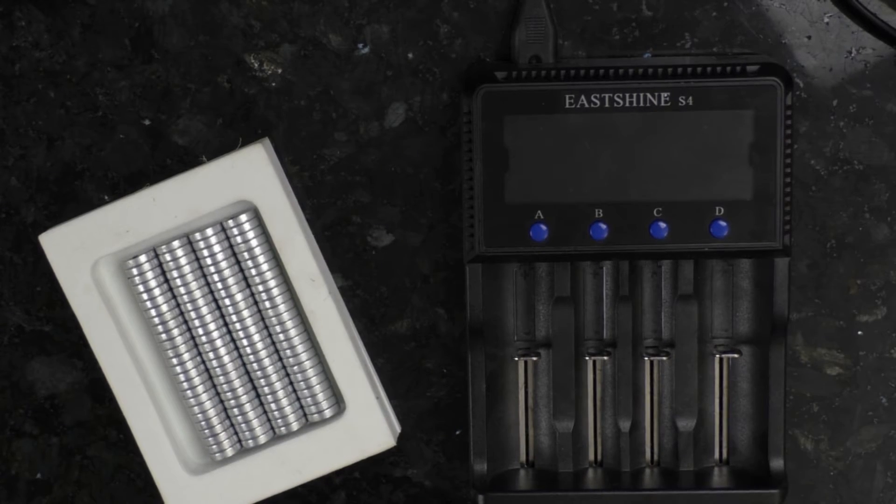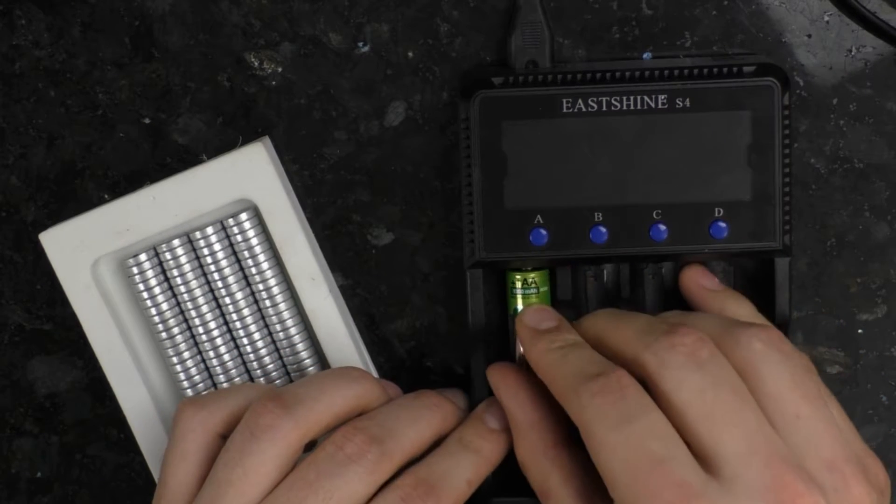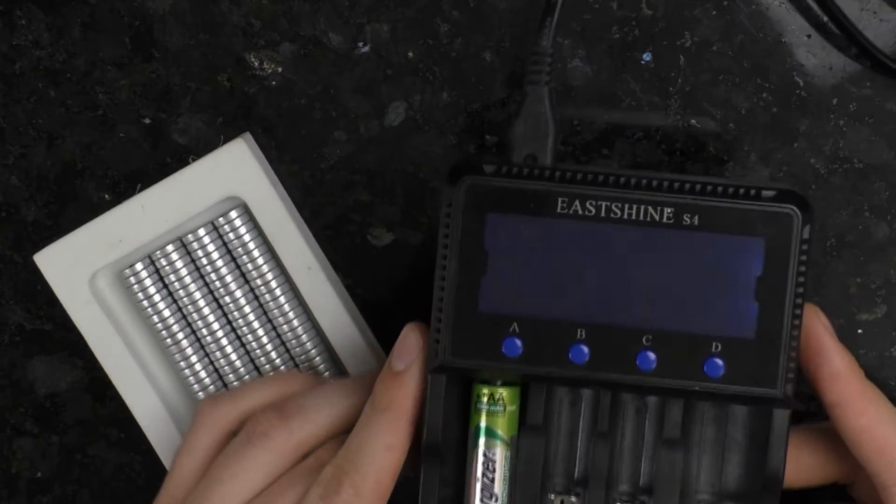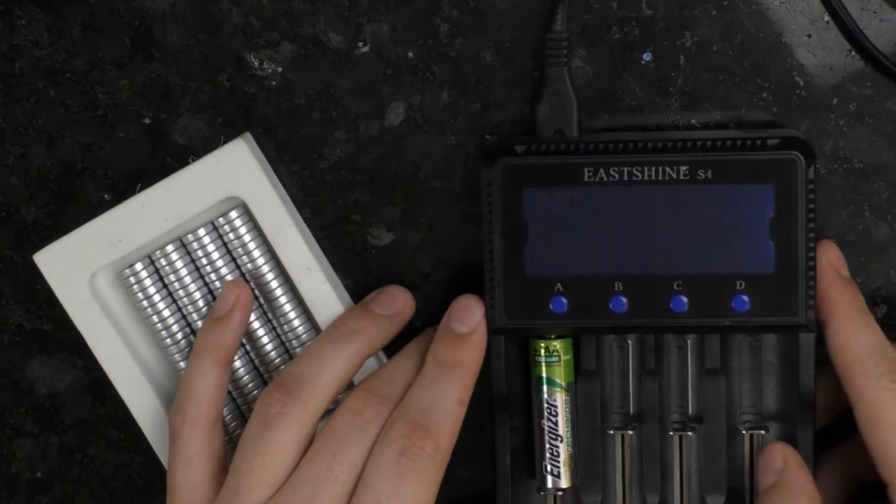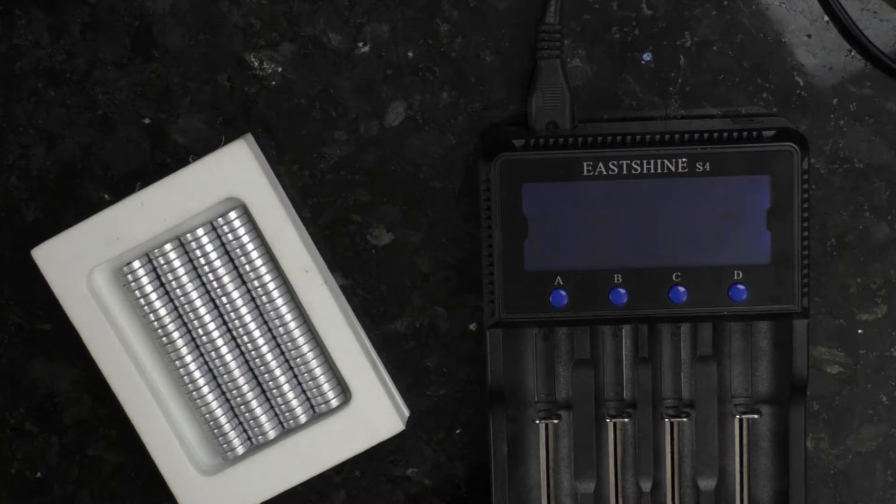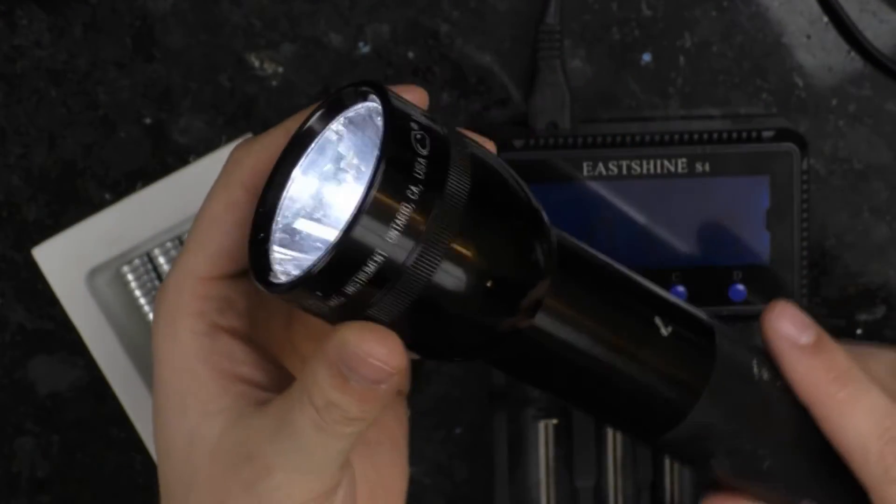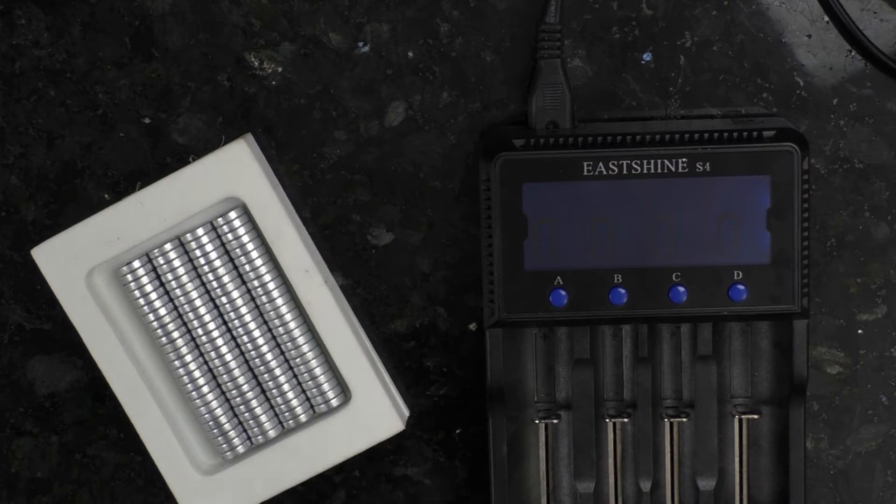Today's video is quite simple. It is going to be a basic modification to take a charger like this that's meant to charge AA and AAA batteries, and convert it to charge something like this. I've had my flashlight here running for about an hour, and inside of it I have two D-cell batteries.